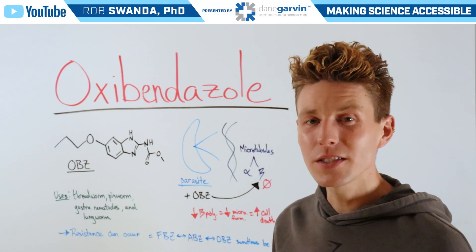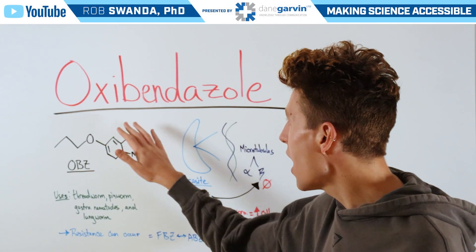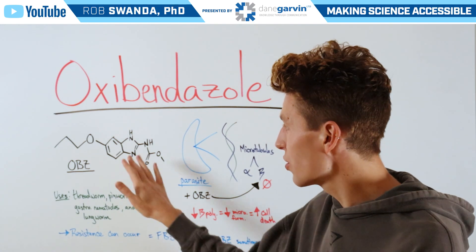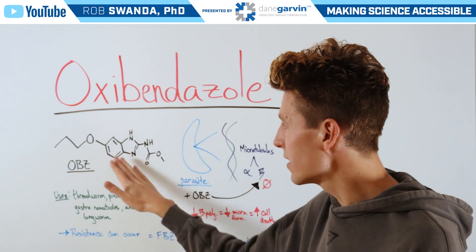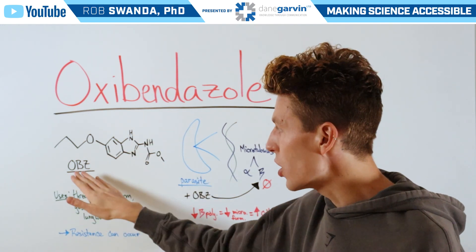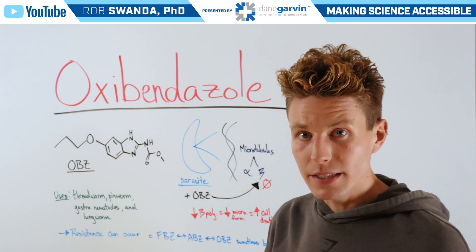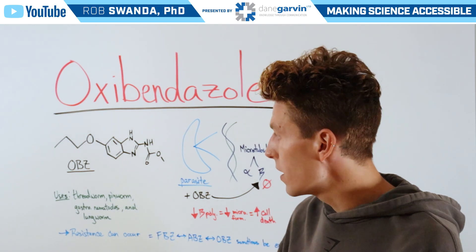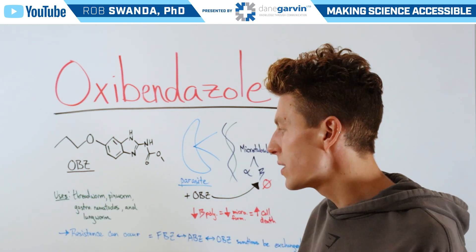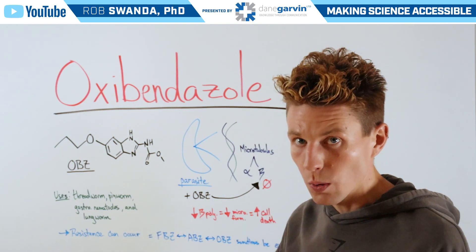Another molecule in the benzimidazole family is known as oxybendazole, which has a molecular structure that looks like this and is often abbreviated as OBZ. It's used in veterinary medicine for the treatment of threadworm, pinworm, gastrointestinal nematodes, as well as lungworm.